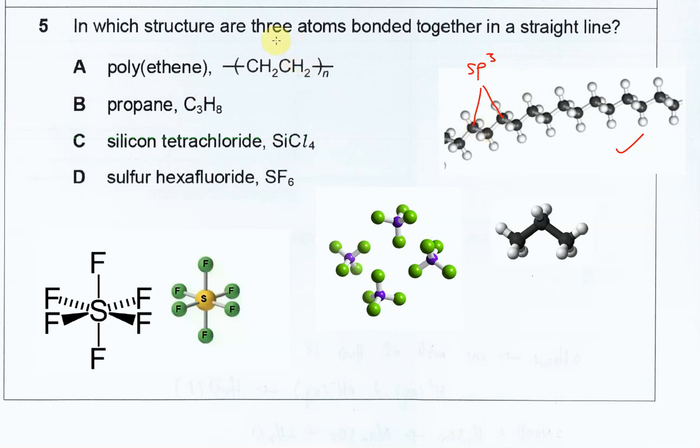That's why it cannot have three atoms bonded together to form a straight line, because it's always in and out. It's tetrahedral, isn't it? That's why polyethylene cannot be the answer.